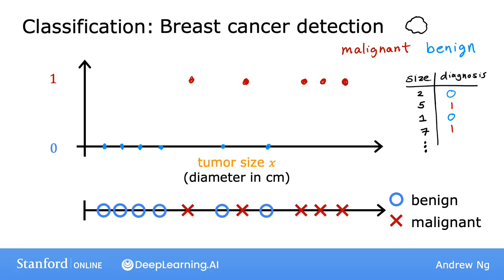And if a new patient walks in for a diagnosis and they have a lump that is this size, then the question is, will your system classify this tumor as benign or malignant?